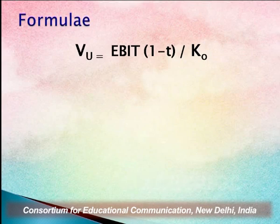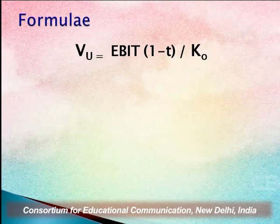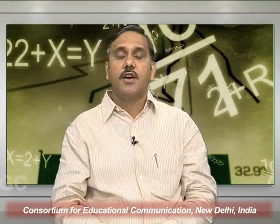The value of unlevered firm is equal to EBIT into (1 minus T) divided by KO, the overall cost of capital. Since an unlevered firm has no debt in its capital structure, there is no interest payment. So from EBIT we deduct tax, giving EBIT(1-T), divided by overall cost of capital. Since the unlevered firm has only equity, KE equals KO — the cost of equity equals the overall cost of capital.